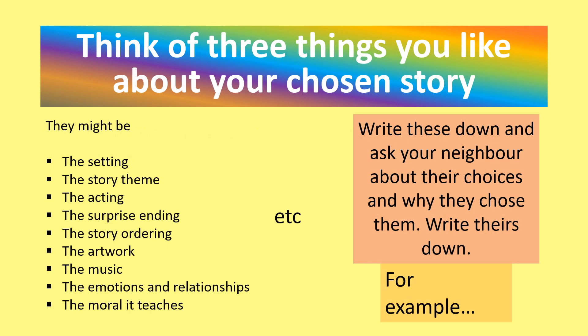Think of three things you like about your chosen story. They might be the setting, the story theme, the acting, the surprise ending, the story ordering, the artwork, the music, the emotions and relationships, or the moral it teaches. Write these down and ask your neighbour about their choices and why they chose them. Write theirs down.